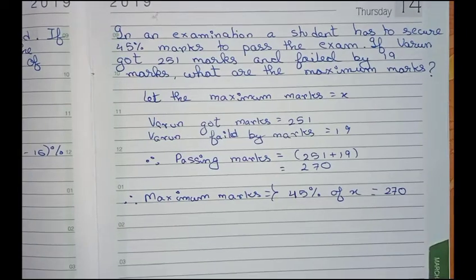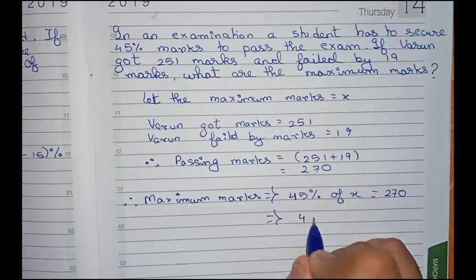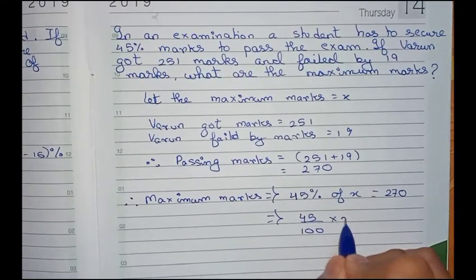So this will be our equation. So now I solve this. So equals to 45% is 45 by 100 equals to 270.